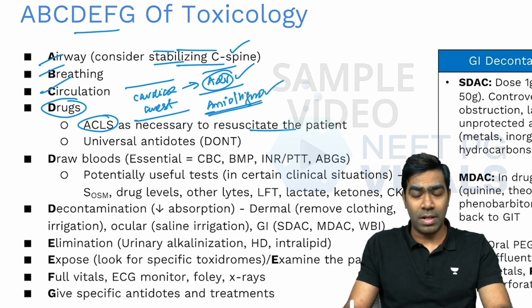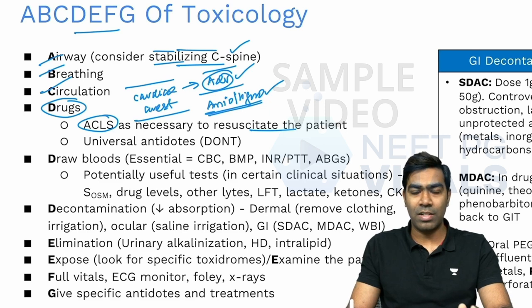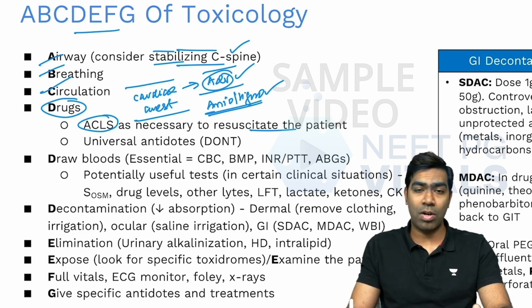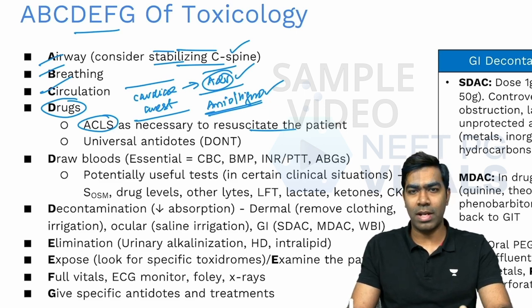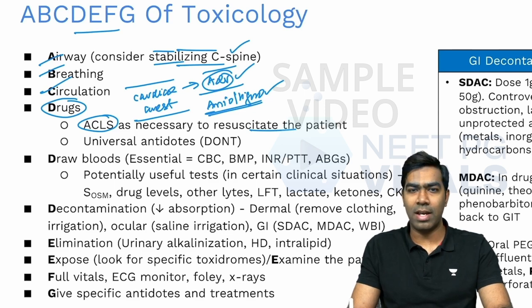You can try other drugs like amiodarone or lignocaine, but these can only be given in shockable rhythms like pulseless ventricular tachycardia and ventricular fibrillation. They cannot be used in non-shockable rhythms like pulseless electrical activity and asystole — that is, flatline.